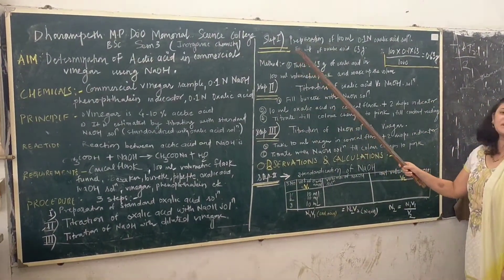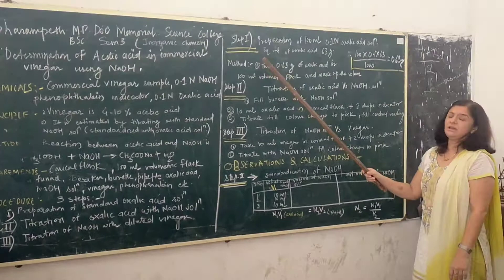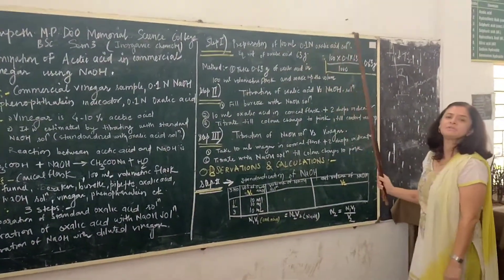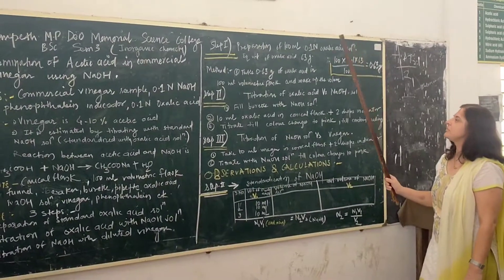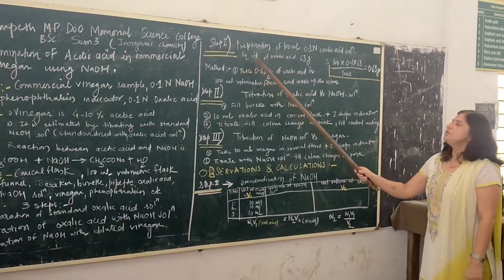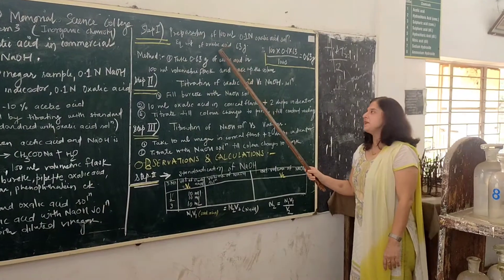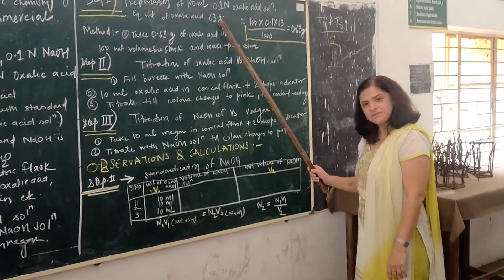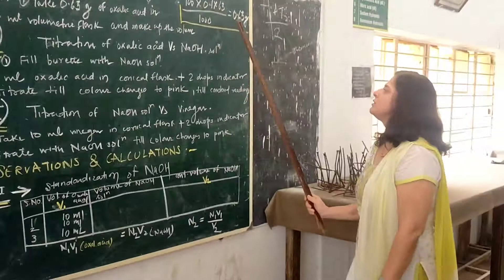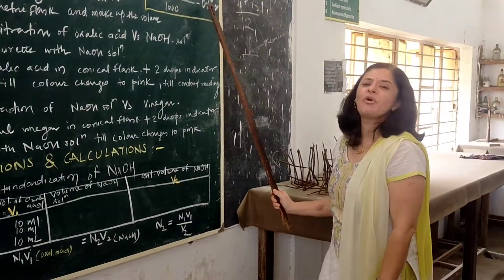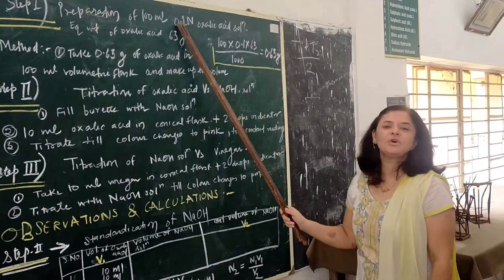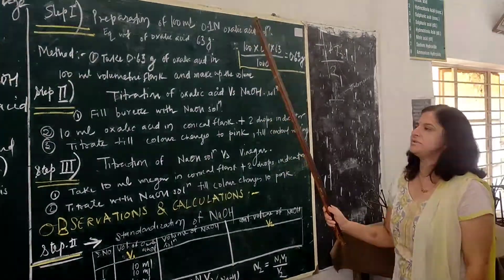In step one, we have to prepare 0.1 normal, 100 ml oxalic acid solution. The equivalent weight of oxalic acid is 63 grams, so for the calculation, in 100 ml we have to take 0.63 grams of oxalic acid for the preparation of 0.1 normal solution.